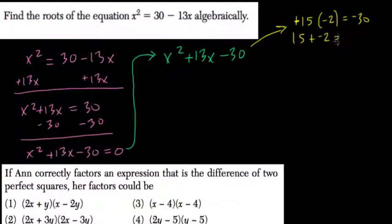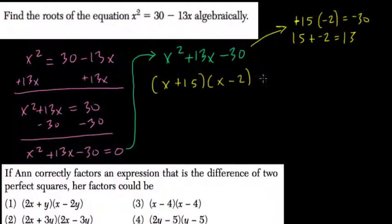15 plus negative 2, what do you get? Well, that's just 13. So, that means you can factor this into x plus 15 times x minus 2 equals 0.